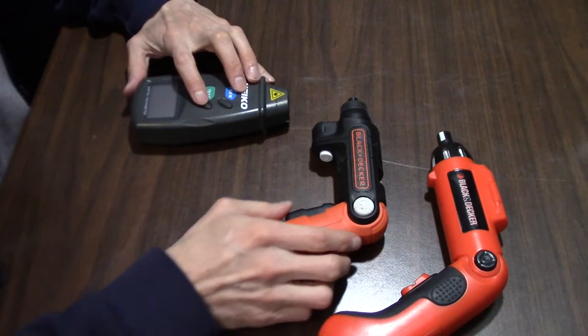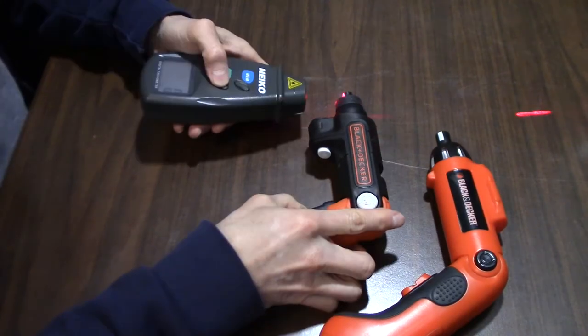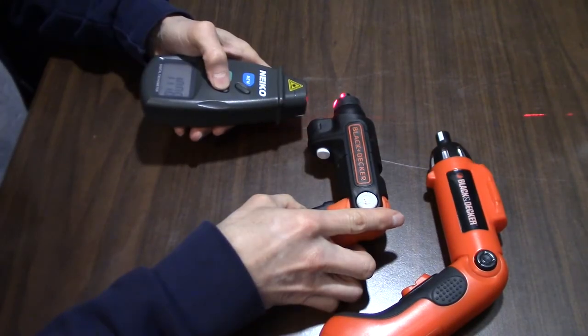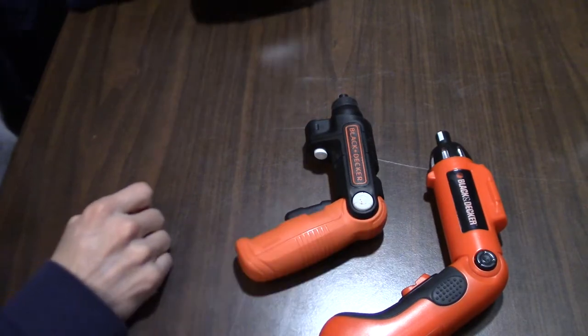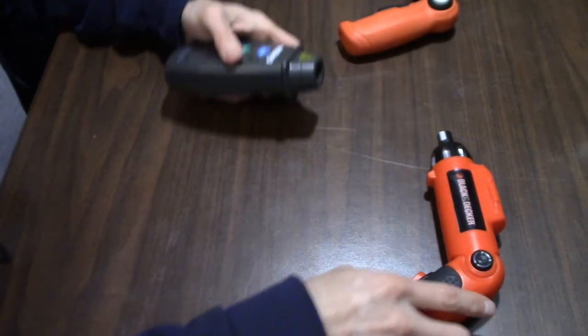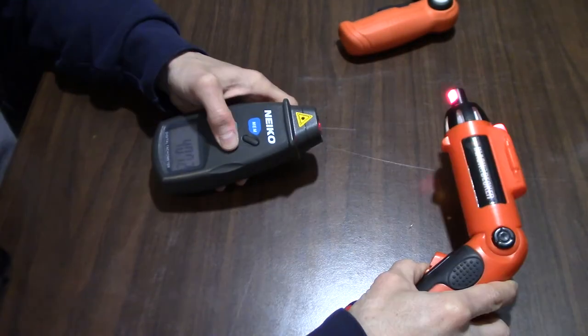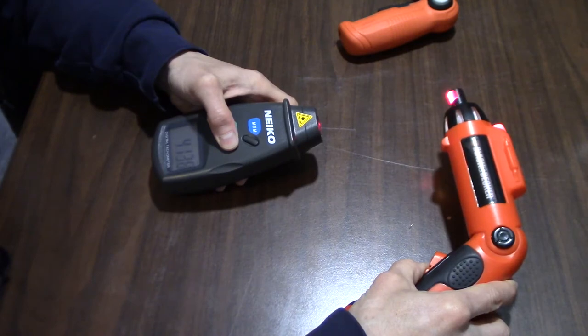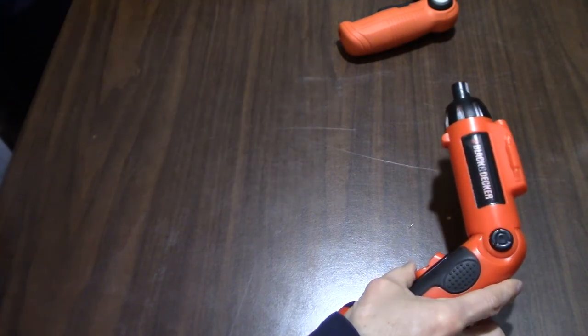Here we have the Black & Decker. 178. 178 RPMs. This one, 410. Looks like about 410 RPM.